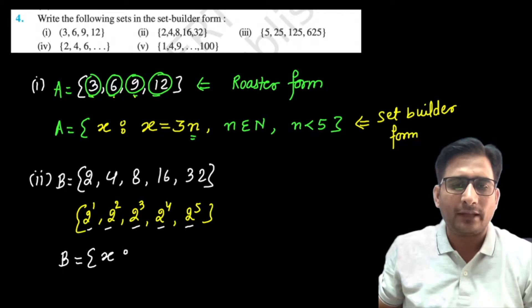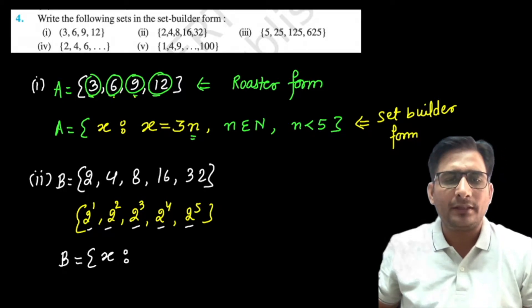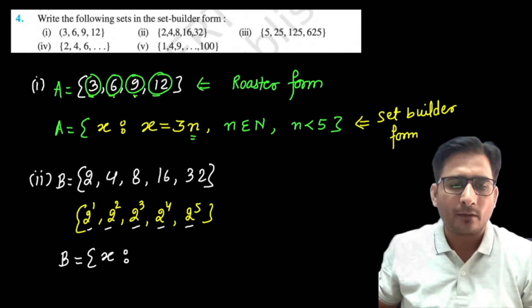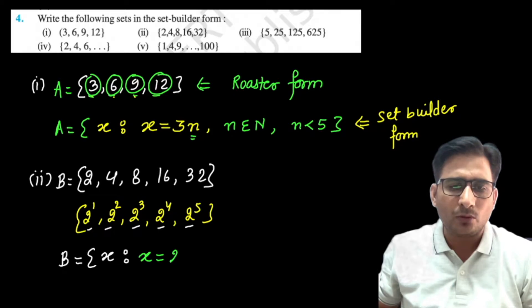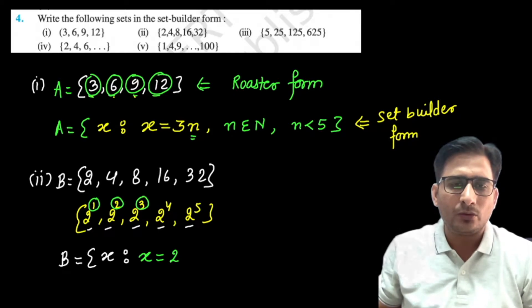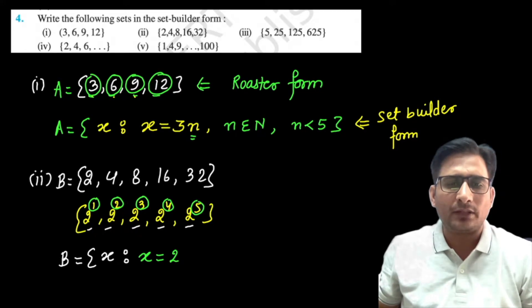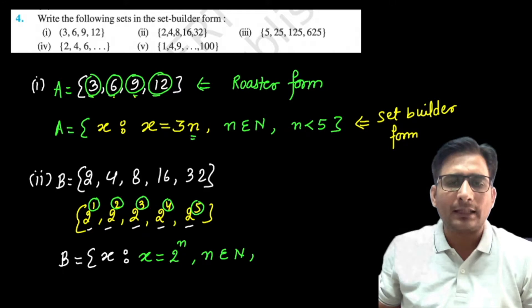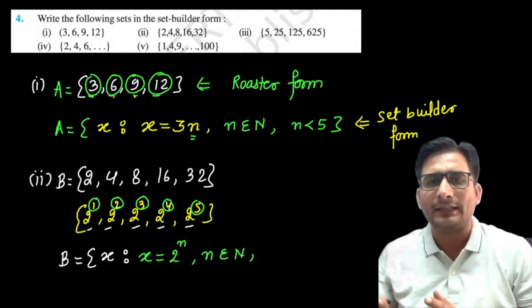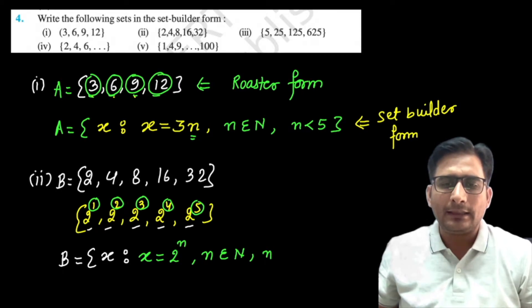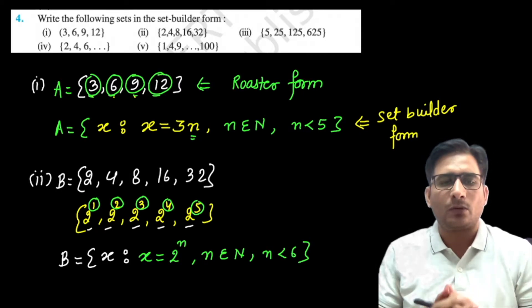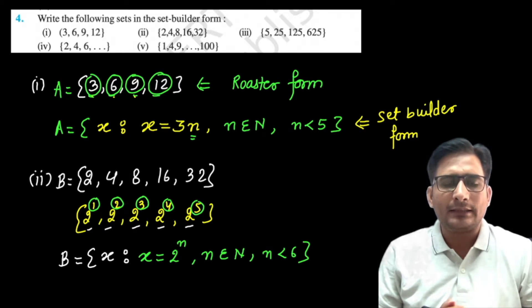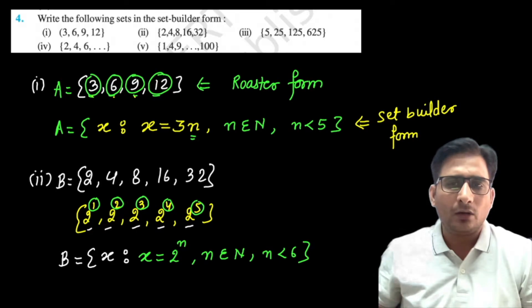Then x = 2ⁿ, where the base 2 is the same throughout and the exponent changes as 1, 2, 3, 4, 5 — these are natural numbers. So n ∈ ℕ (natural numbers). To stop the series at 5 elements, we write n < 6. So the set builder form is {x ; x = 2ⁿ, n ∈ ℕ, n < 6}. This is the answer for this question.